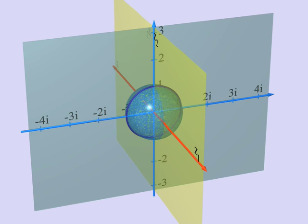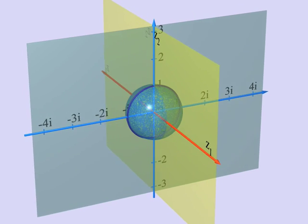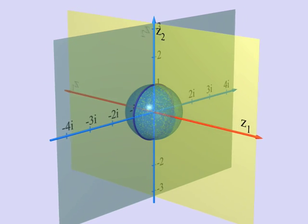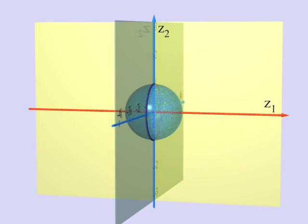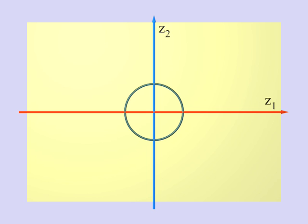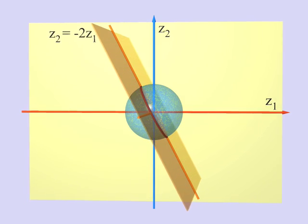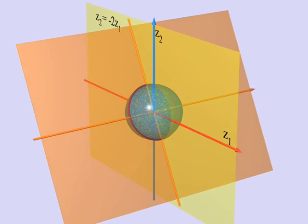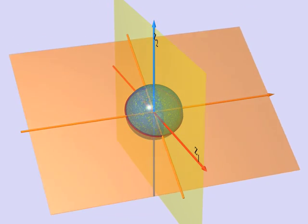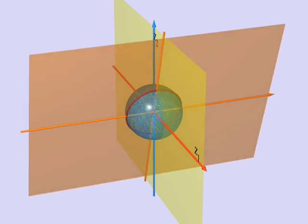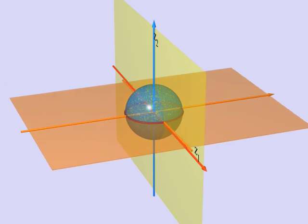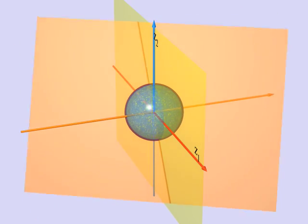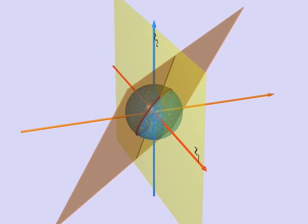Now, what is true for the horizontal line and the vertical line is equally true for all lines going through the origin. Here you can see the line with equation Z2 equals negative 2 times Z1. But we could do the same with any line, Z2 equals A times Z1, for any complex number A. In this manner, the three-sphere in four-dimensional space is filled with circles, one for each complex line through the origin in our plane of two complex dimensions.